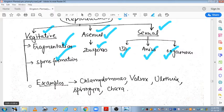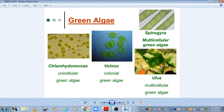Examples of green algae are Chlamydomonas, Volvox, Ulothrix, Spirogyra, and Chara. I want to show you the different types of green algae.